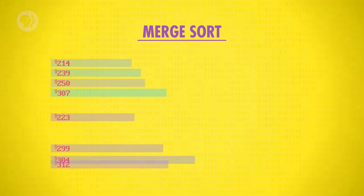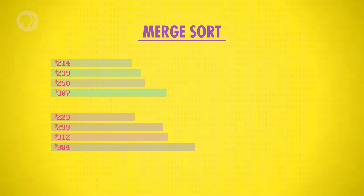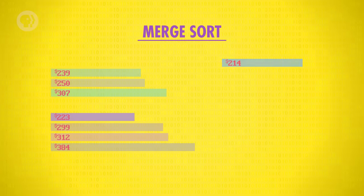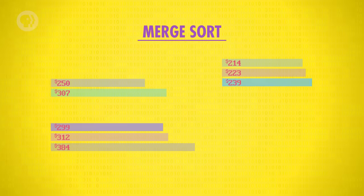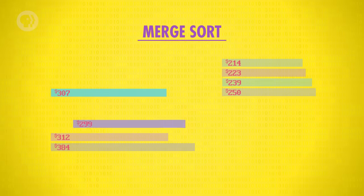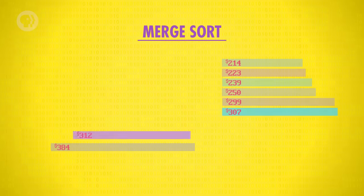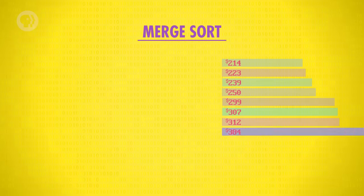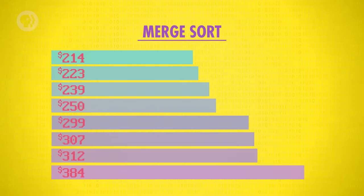We repeat the exact same merging process for the two remaining arrays of size 2. Now we have two sorted arrays of size 4. Just as before, we merge, comparing the first two numbers in each array and taking the lowest. We repeat this until all the numbers are merged, and then our array is fully sorted again.